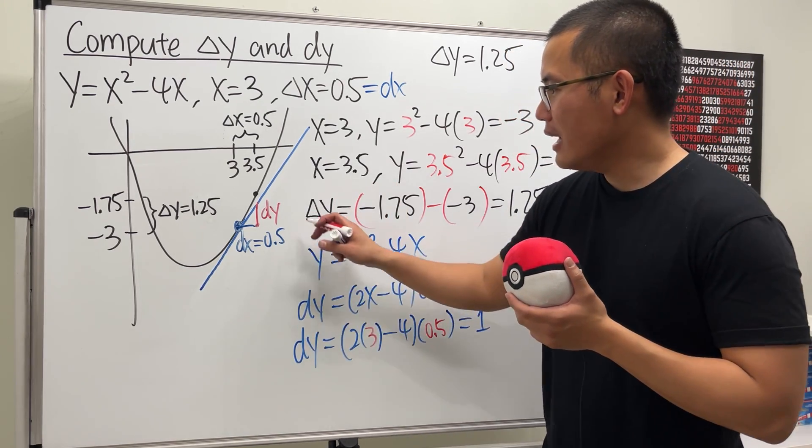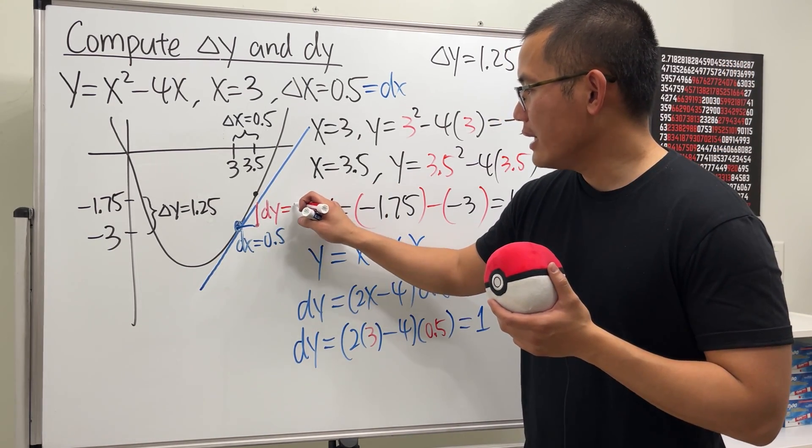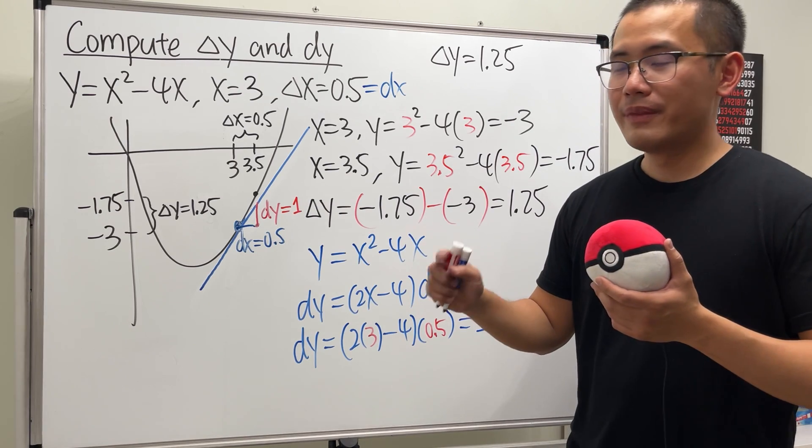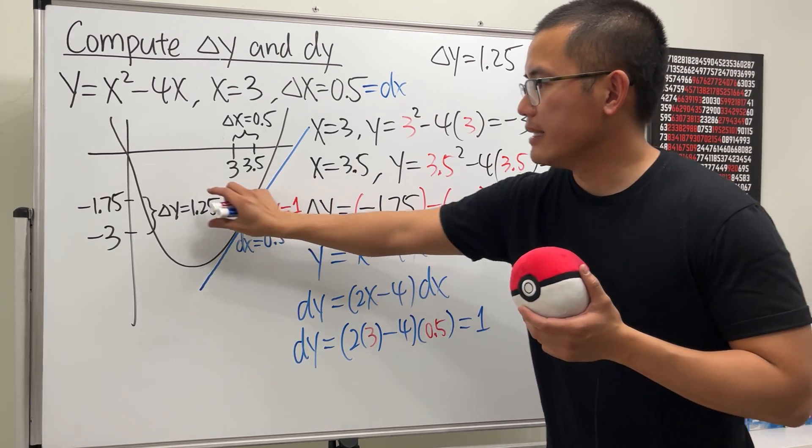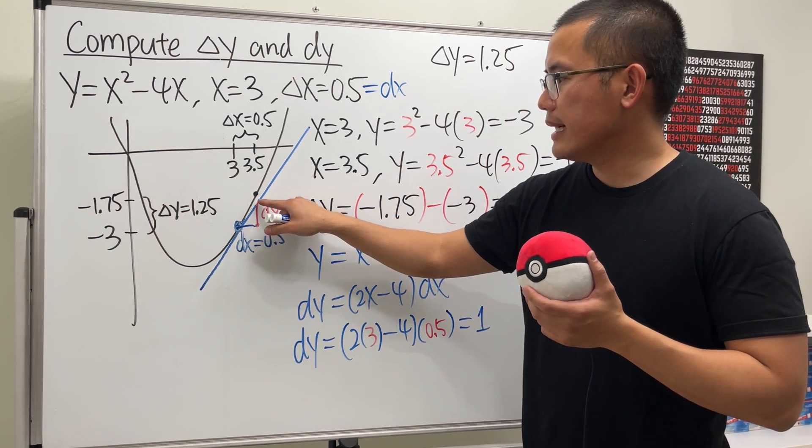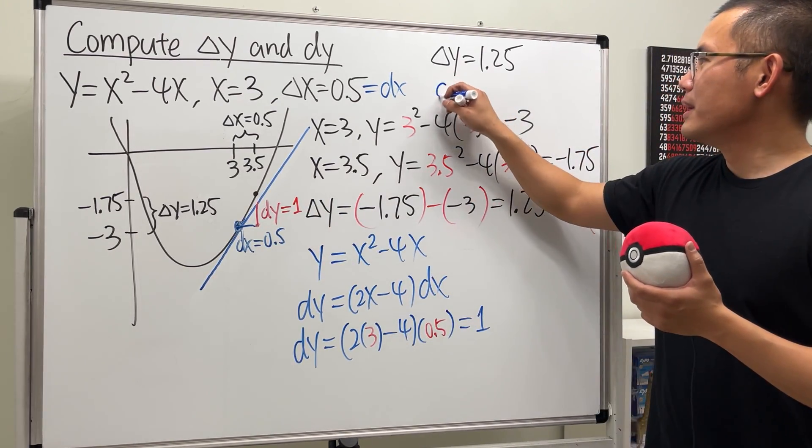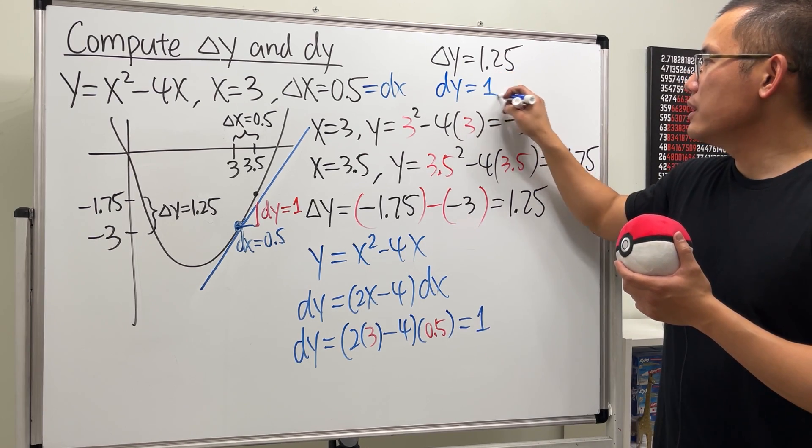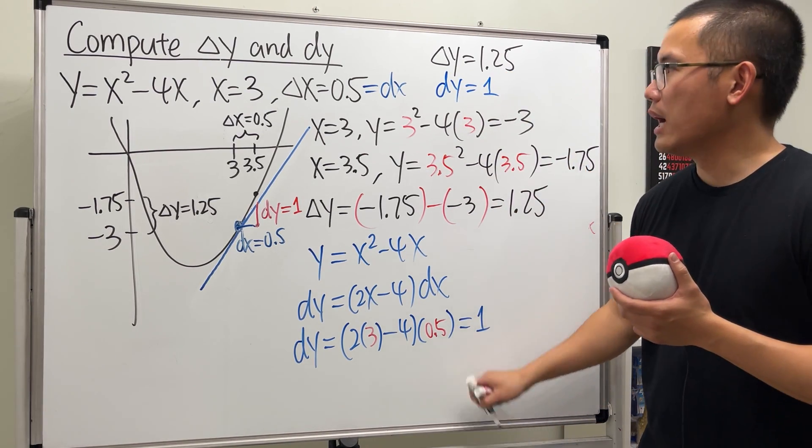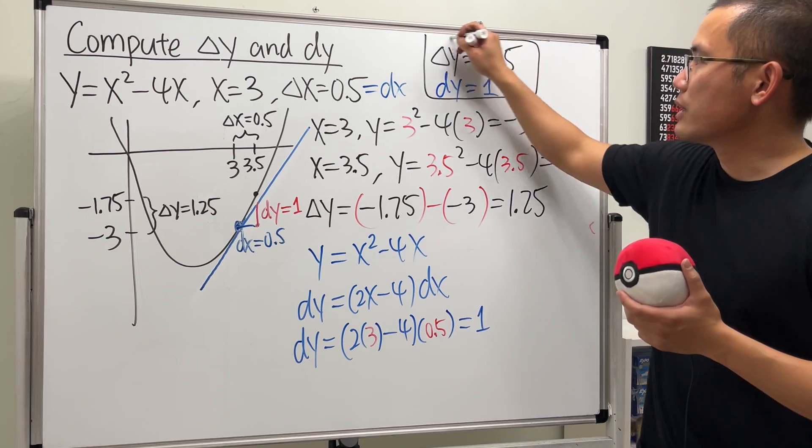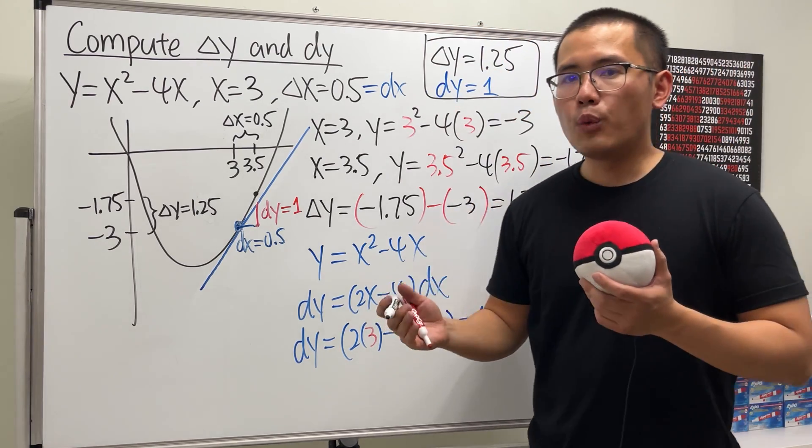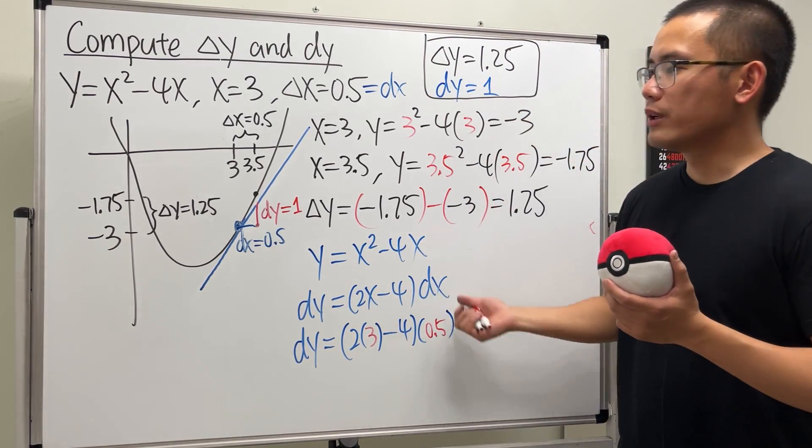Let's see, this is 6 minus 4, which is 2. 2 times 0.5, this right here is equal to 1. So dy is actually just equal to 1. This is smaller than delta y because you do see that there is the gap from here to here. So ladies and gentlemen, dy in our situation is equal to 1. That's the difference between delta y and dy and how you compute it.